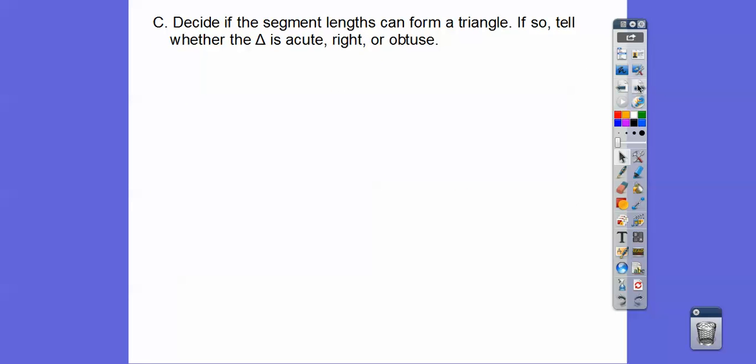Okay, so decide if the segment lengths can form a triangle, and if they can, tell whether the triangle is acute, right, or obtuse. What about these two guys? Can that be a triangle? Is 24 plus 45 bigger than that? Yeah, it could be a triangle. So 51 is the bigger one, so we want to see what's the relationship with 51² and 24² plus 45². So when we square all of that stuff, we find out that they're equal, so this is a right triangle.